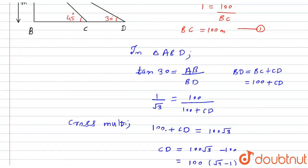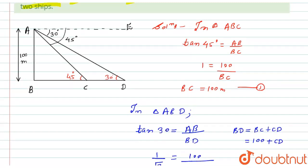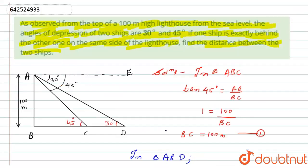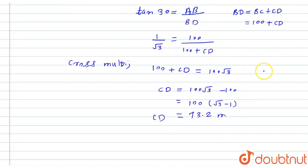So CD is the length between the two ships, which was asked to find. Hence, the distance between the two ships is 73.2 meters. I hope you like the solution. Thank you.